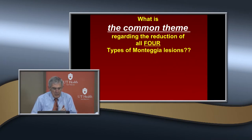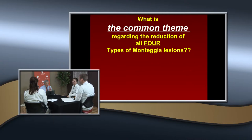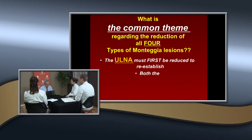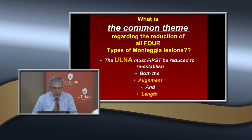What is the common theme you must do in reduction of all four types of Monteggia lesions? The key is the ulna. You've got to correct the deformity of the ulna. That must be reduced to reestablish both the alignment and the length. If you don't do that, you can't get the radial head in. The first thing you've got to focus on is the ulna.